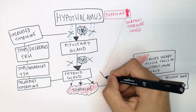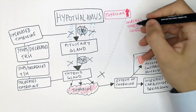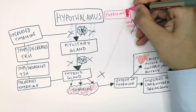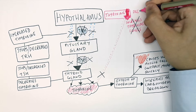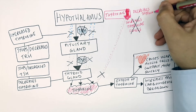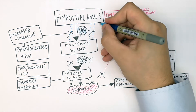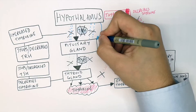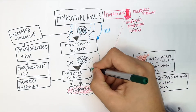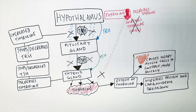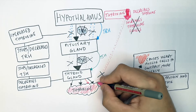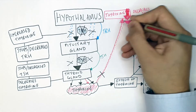Then there is a decrease in thyroxin levels produced by the thyroid gland, and thyroxin levels go down. The hypothalamus detects decreased levels of thyroxin in the blood and secretes TRH, which causes the pituitary gland to secrete TSH, which then causes the thyroid gland to produce thyroxin.